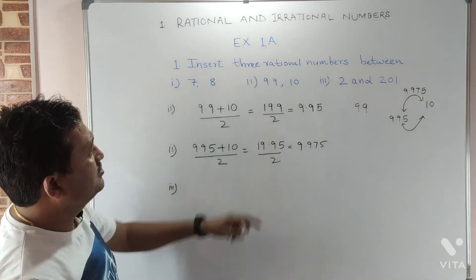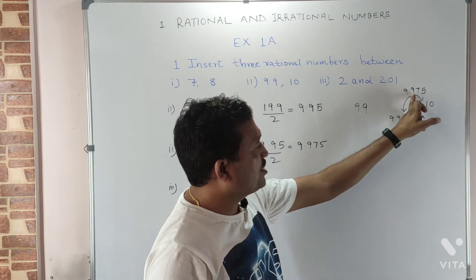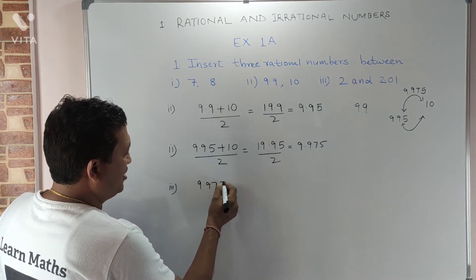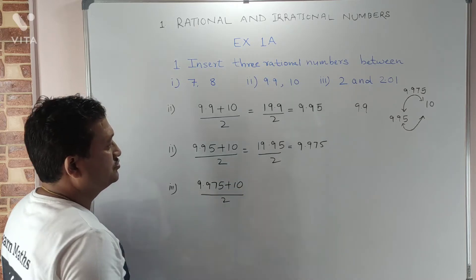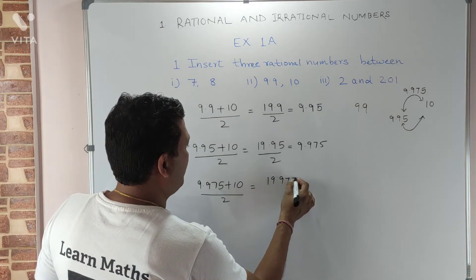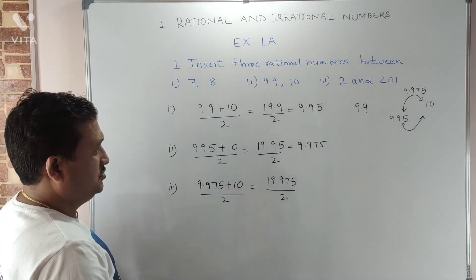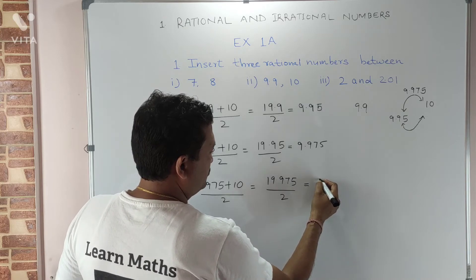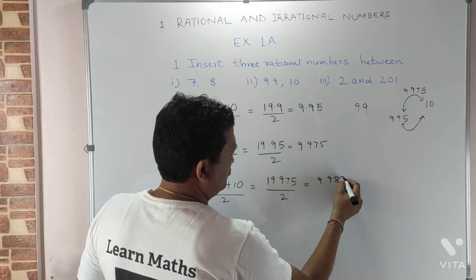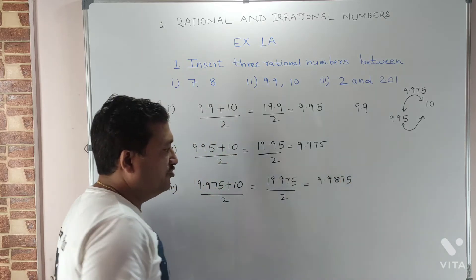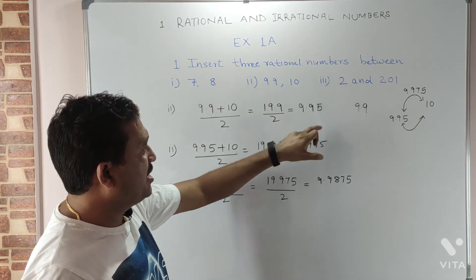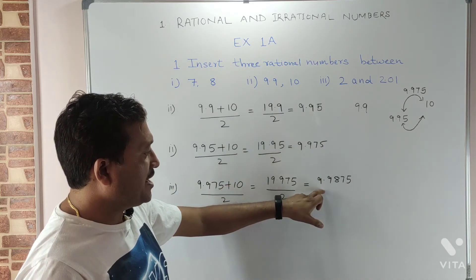Now we will find the third rational number between nine point nine and ten. There will be a rational number between nine point nine seven five and ten. We add these two numbers and divide by two: nine point nine seven five plus ten divided by two equals nineteen point nine seven five divided by two, giving us nine point nine eight seven five. So the three rational numbers between nine point nine and ten are nine point nine five, nine point nine seven five, and nine point nine eight seven five.